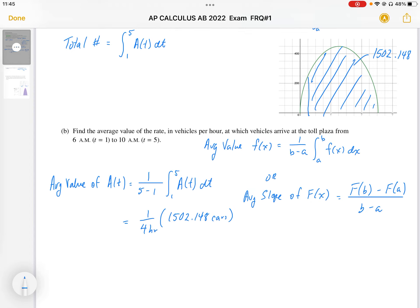And 5 hours minus 1 hour represents 4 hours. This gives us the rate in cars per hour, which works out to be 375.537. This is in cars, which is the area, divided by the interval, which is hours. So we have our average value of the a function as 375.537 cars per hour.